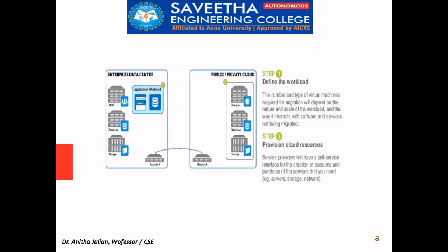In step 2, we are going to provision the cloud resources. There is a network in the data center and a network in the private or public cloud — both are connected. Whatever is available in the data center is now being provisioned to the public or private cloud. This will include all our services, whether it is server, storage, network, and so on.